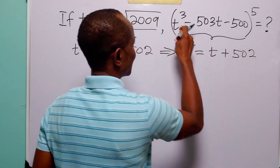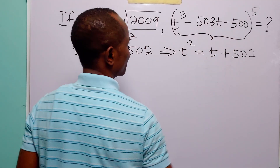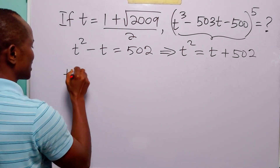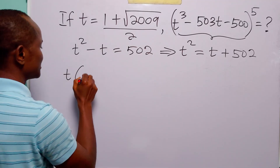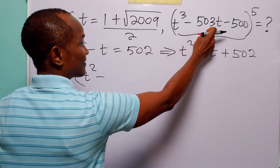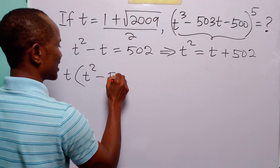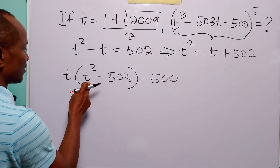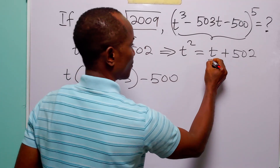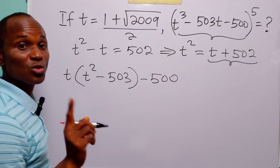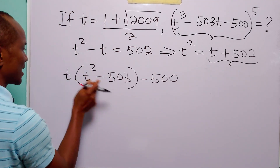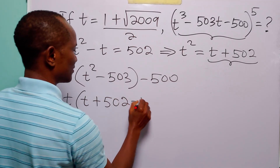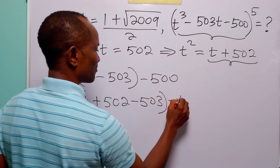Now let us look at this polynomial: t³ − 503t − 500. We can factorize, pulling t out of the first two terms. When we do that, we have t into (t² − 503), then minus 500. But we have t² is equal to t + 502, so we are now going to substitute this for t². When we do that, we have t(t + 502 − 503), then minus 500.